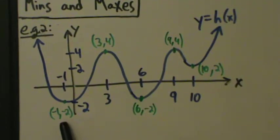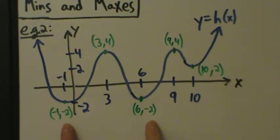So here, global minimum is negative 2, is y equals negative 2 at x equals negative 1. And the global minimum is y equals negative 2 at x equals 6. So again, the global minimum, only one value, but it happens at two different locations, negative 1 and 6.